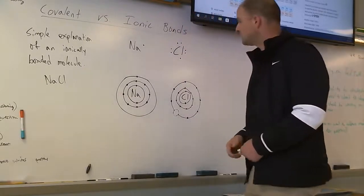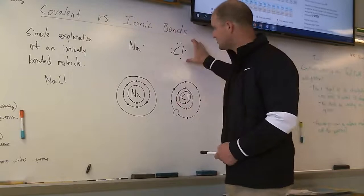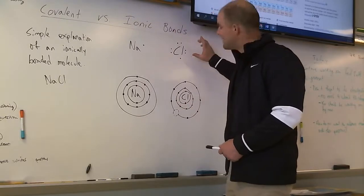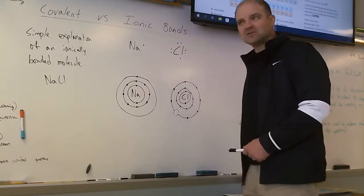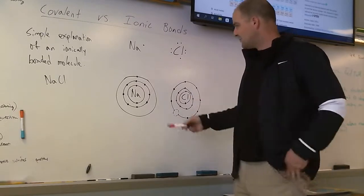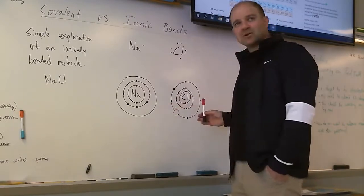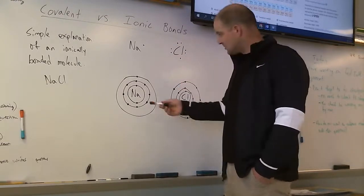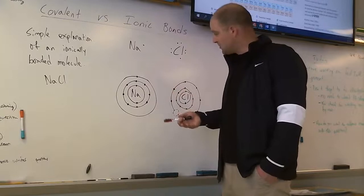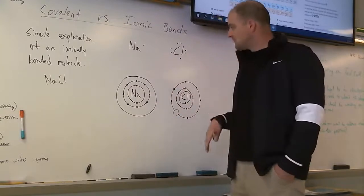So I have a Lewis dot structure of each of those atoms on the top and a Bohr model of each of them on the bottom. Notice that both sodium and chlorine are on that third row of elements on the periodic table, so that represents how many energy levels they have. Each of them has three.